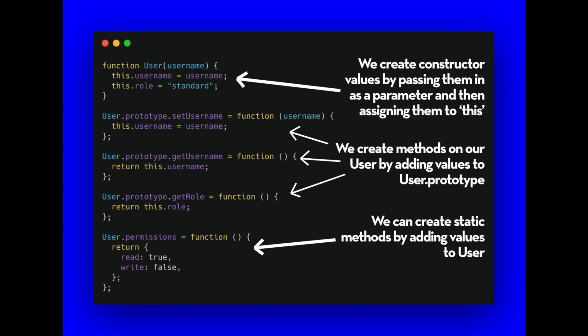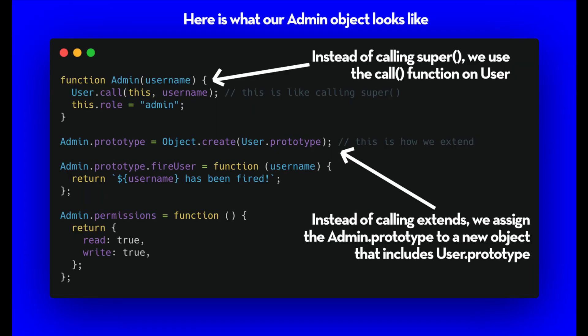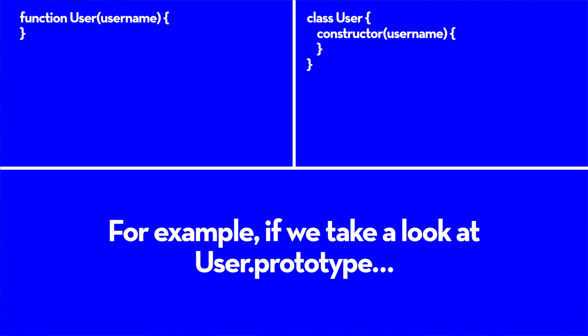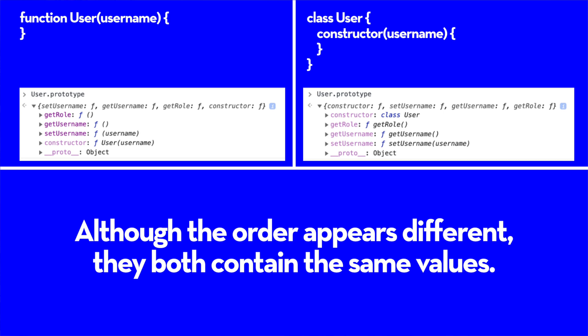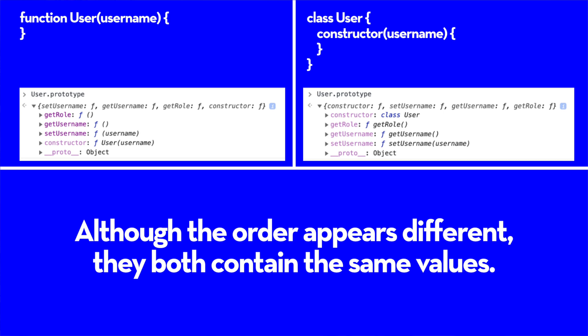A big difference in structure arises when we try to create inner functions. With classes, we can create inner methods by simply creating functions inside of the class, but with prototypes, we have to create them after the creation of the object by adding functions as values on the prototype. Rather than going through all the nuances of the differences here, I'm going to put all of this up into a repo — the link will be in the description. The important thing to note is that when we write classes, under the hood it's effectively doing the same thing as what we would have done with ES5 object creation using the prototype. If we take a look at the admin and the admin prototype for class creation as well as ES5 object creation, you see that it's doing the exact same thing.